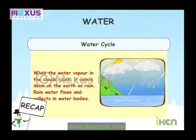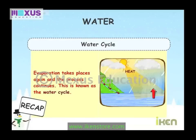When the water vapour in the clouds cools, it comes down on the earth as rain. Rainwater flows and collects in water bodies. Evaporation takes place again and the process continues. This is known as the water cycle.